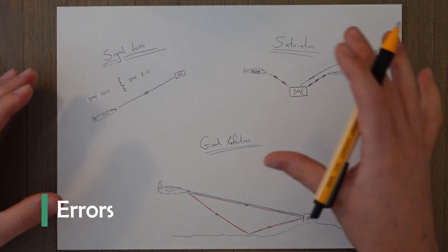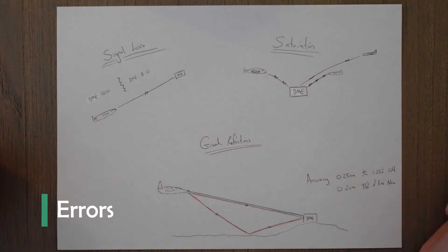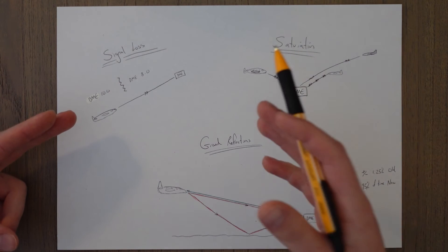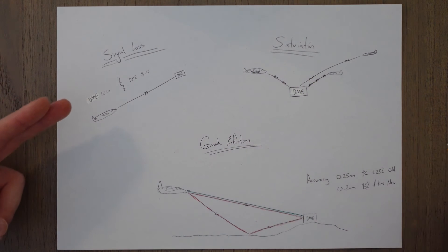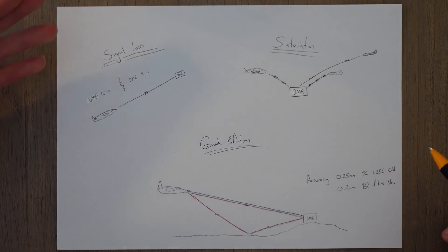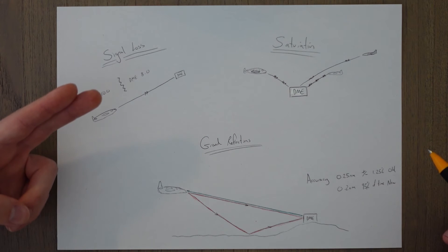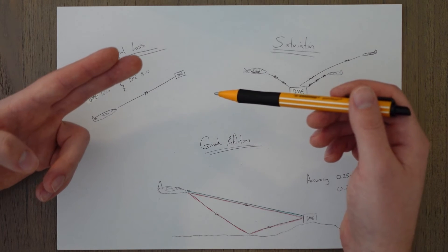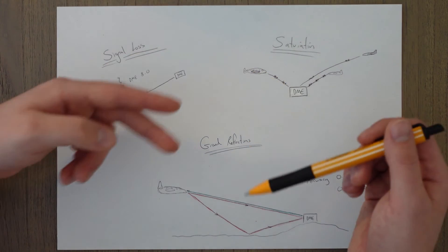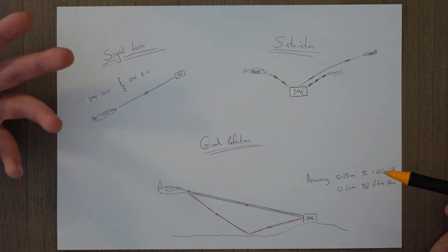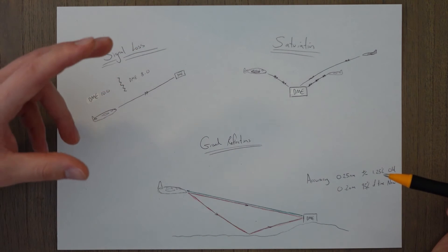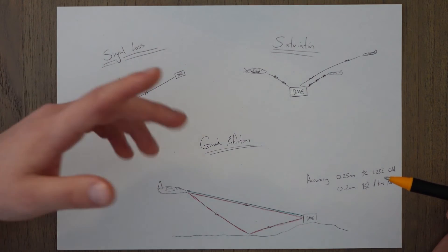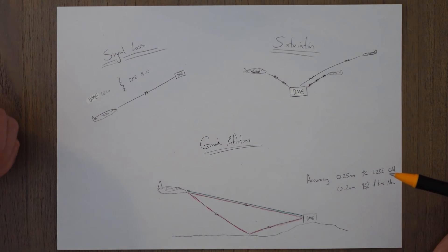There are a few errors in DME systems, though generally they're pretty accurate. The first is signal loss. If we're flying towards the DME station and lose the signal temporarily, the DME has a memory function built in that will keep counting down at the same rate we've been flying towards it. If the signal is lost for more than 10 seconds, a failure flag, zero-zero-zero distance, or dashes will appear — that's when the DME has failed.